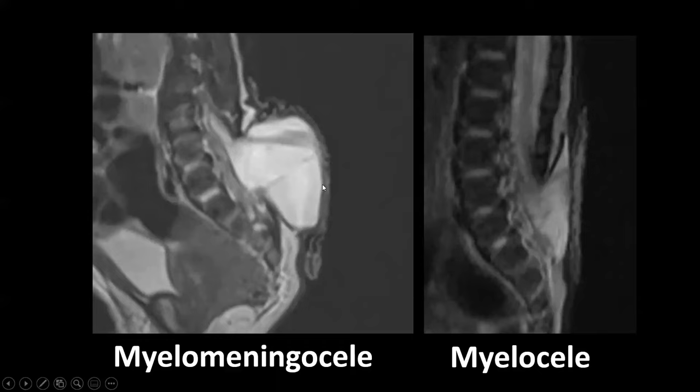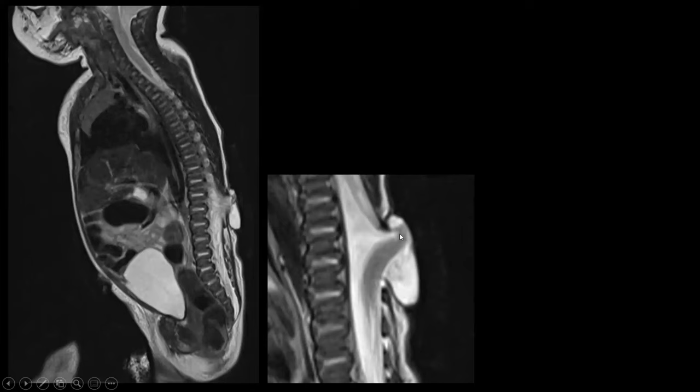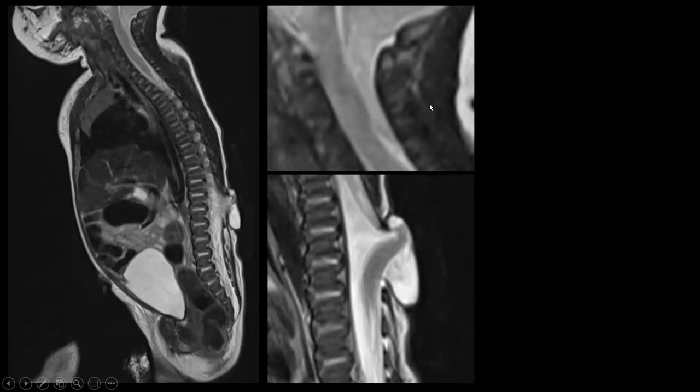This difference is also appreciable in the axial plane. In a myelomeningocele the placode is attached to the meningocele sac which protrudes beyond skin level, and in a myelocele the placode and skin are flush with one another. Myelomeningocele constitutes about 89% of all open spinal dysraphisms. It arises embryologically from no disjunction, which you can easily understand leads to a posterior defect in the spinal canal and spinal cord.